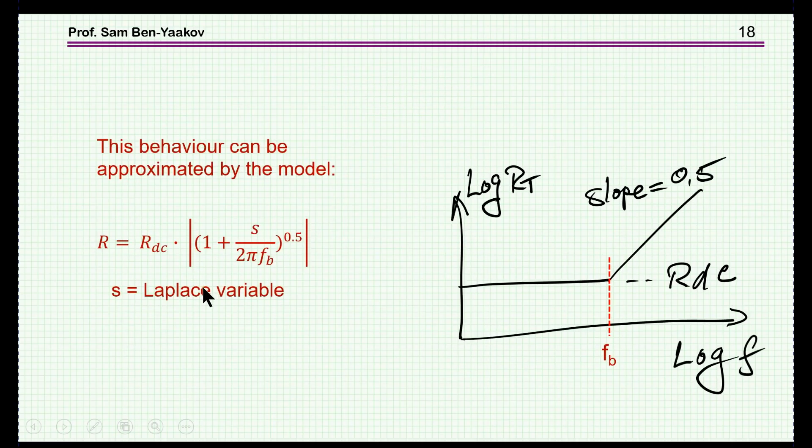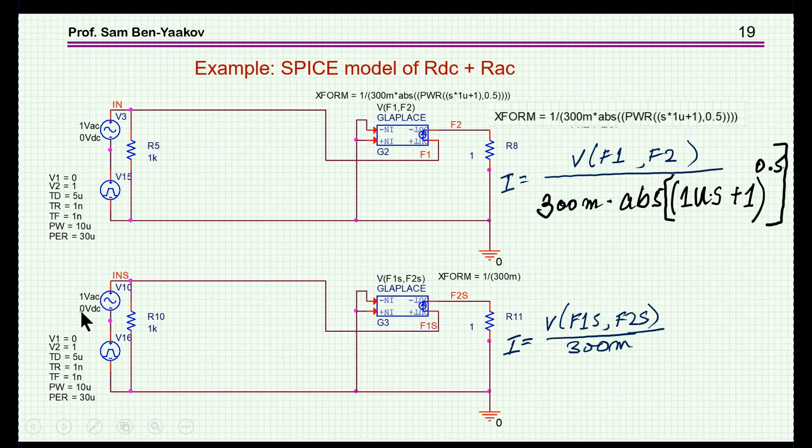Now we go back to our problem. We have a resistor which is a function of frequency, this is the function. We are expressing this function as a Laplace transform expression with a power of 0.5 because of the slope here. This is the DC value, and we need to take the absolute value.